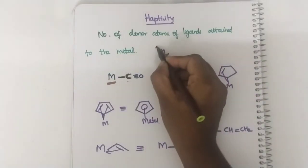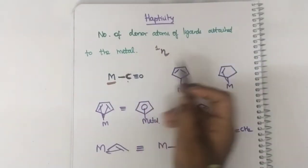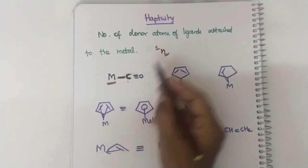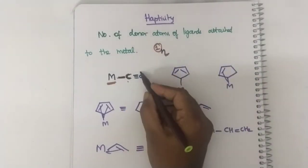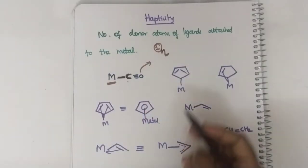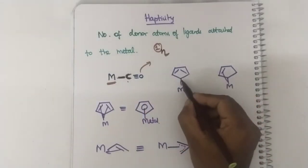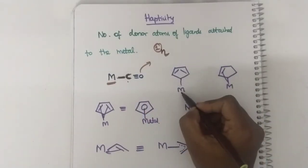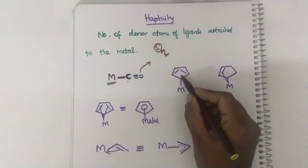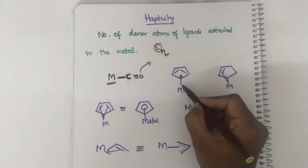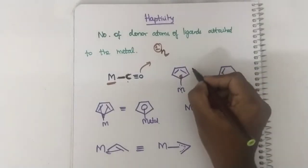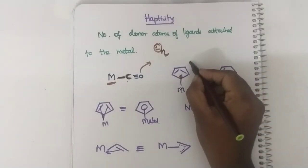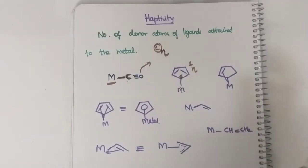Here it is one because the number of donor atoms attached is only one. Hence eta power one. In this case the metal is attached to the carbon present here — it is only attached to the carbon. So here also eta will be one.